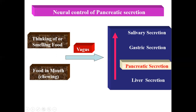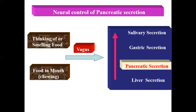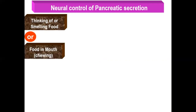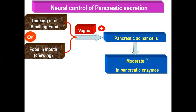The conditioned reflex is triggered by thinking about food, smelling food, or touching food. The unconditioned reflex is triggered by the presence of food in the mouth and by chewing or mastication. Both pathways act through the vagus nerve, increasing stimulation of the pancreatic acinar cells, leading to a moderate increase in pancreatic enzyme secretion.